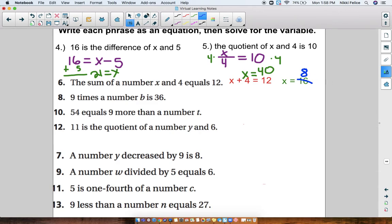All right, number 8. 9 times a number B is 36. That's multiplication. So our equation is 9B equals 36. To solve for B, we do the inverse. We do the division. So 36 divided by 9. B equals 4.